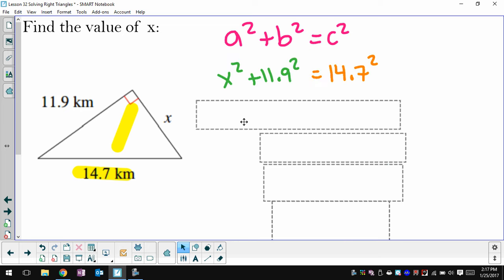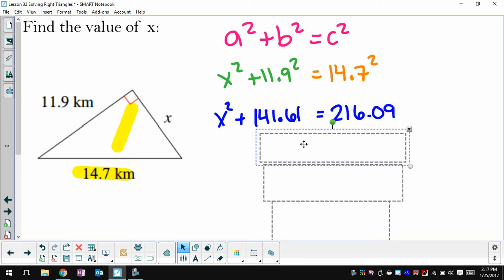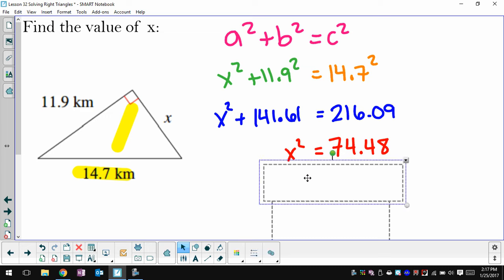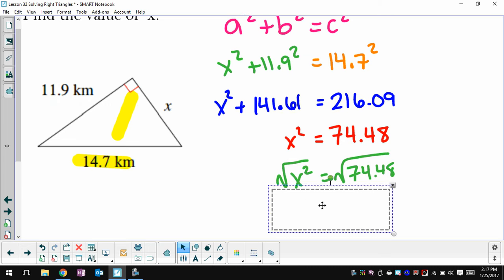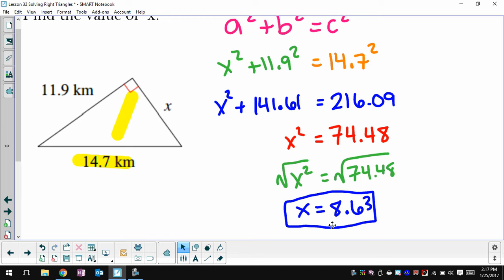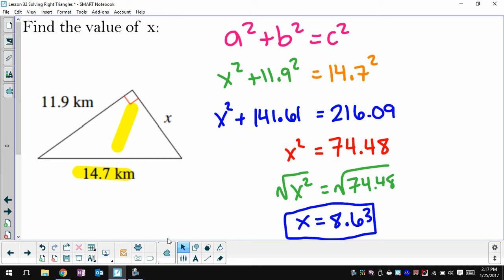Again, if the variable for me is not c, I like to put it first. I like to make it a. It's kind of the way we're used to seeing equations look. I'll square the 11.9 and the 14.7. Then I'll start solving the square root of both sides to get that x is close to 8.63. You might have said 8.6 and that's totally fine too.